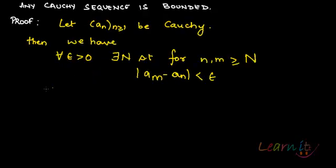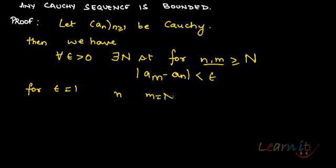It holds true for all epsilon. So can we take it for epsilon equal to 1? That means for epsilon equal to 1 this will hold. In terms of n and m, we can take m as capital N itself. So that means there exists an N such that for n greater than or equal to N, we have |a_n minus a_N| less than 1.